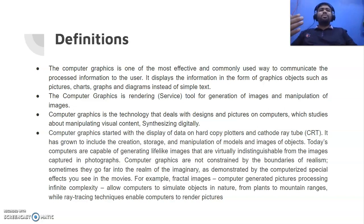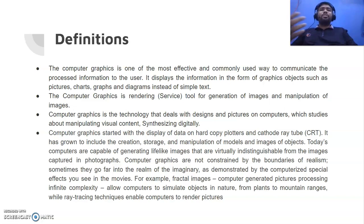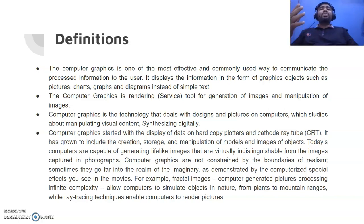Here we can clearly understand that mostly we are talking about images — what is rendering, what is generation of images — we will come to that in further lectures. The third definition: computer graphics is the technology that deals with designs and pictures on computers, which studies about manipulating visual content and synthesizing it digitally. Some content or information gets processed, synthesized digitally, and brought in front of the user. This particular course is going to take you to the world of graphics, where you'll understand what is going on inside the machines and how you see such beautiful designs and animations.